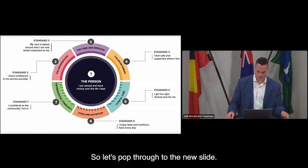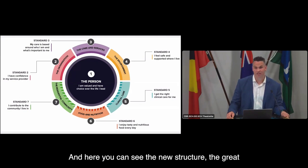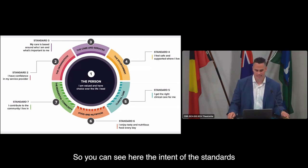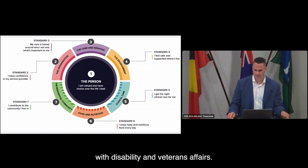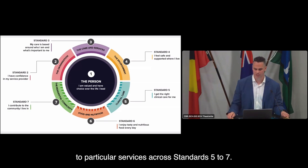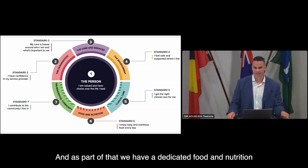Here you can see the new structure. The intent of the standards is to place the person at the centre and enable alignment with disability and veterans affairs. There is a set of core standards — standards one to four — and standards specific to particular services across standards five to seven. As part of that, we have a dedicated food and nutrition standard, which government committed to deliver.